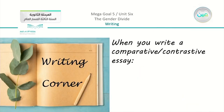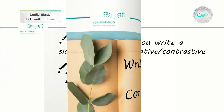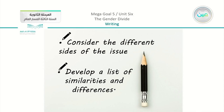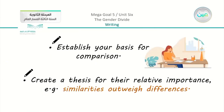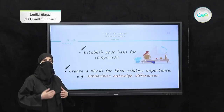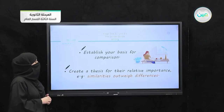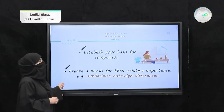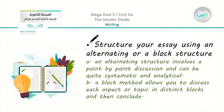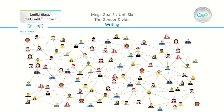We have our writing tips for the comparative or contrastive essay. Consider the different sides of the issue, develop a list of similarities and differences, and establish the basis for comparison. You will mention the two people and then start the comparison. Create a thesis for the relative importance — mention similarities and whether they outweigh differences. Structure your essay using an alternating or a block structure — we will explain what this means.